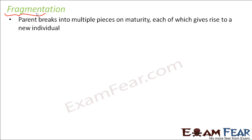Now let us talk about the next type of asexual reproduction: fragmentation. Fragmentation is derived from the word fragment, which means part or pieces. In fragmentation, the parent breaks into multiple pieces upon maturity, and each of those pieces gives rise to a new individual. Each piece is termed a fragment, and that is why the process is called fragmentation.